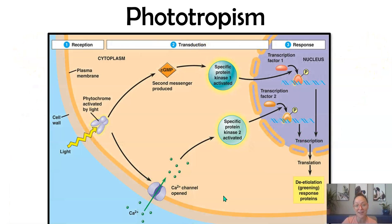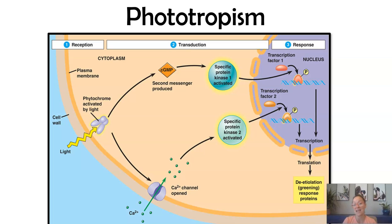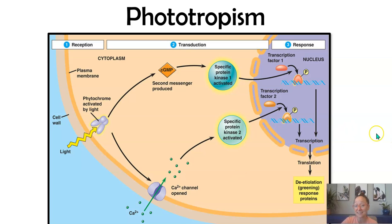Plants also have receptor proteins — just like we saw in AP Bio Unit 4 with cell communication — where instead of a ligand, plants can respond to light. Light can activate the receptor protein, activate a signal transduction pathway, and trigger a cell response.